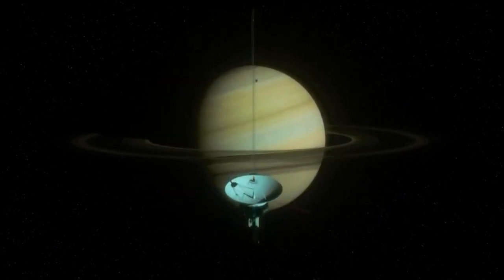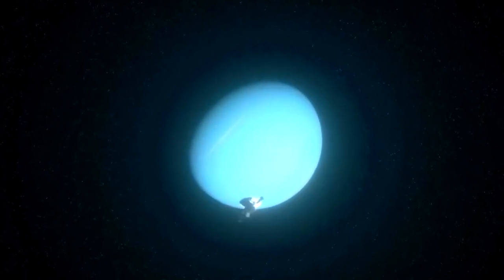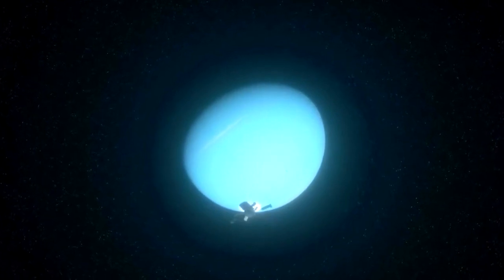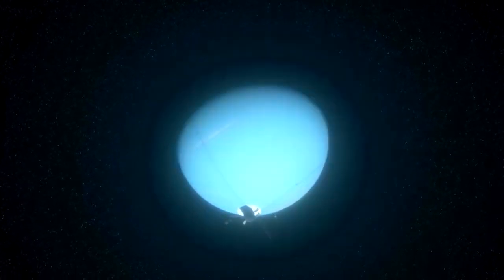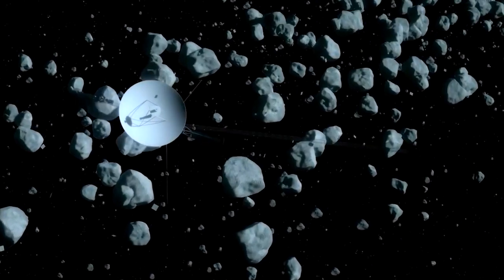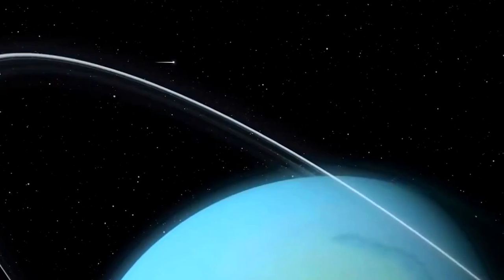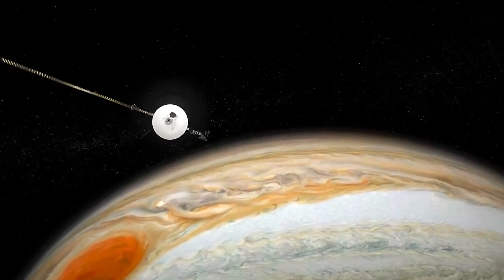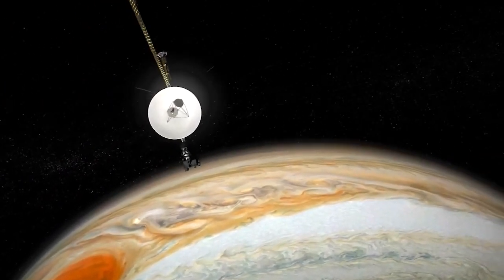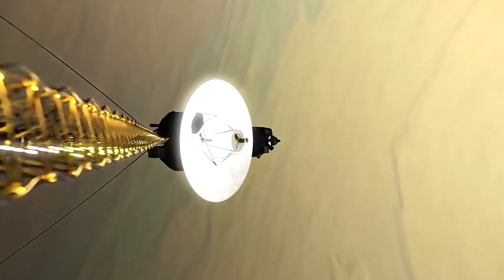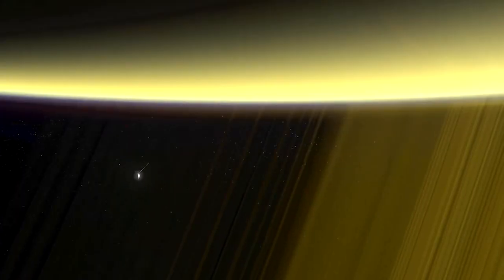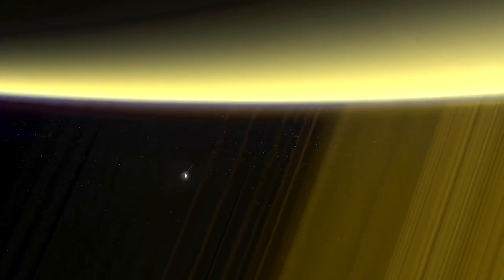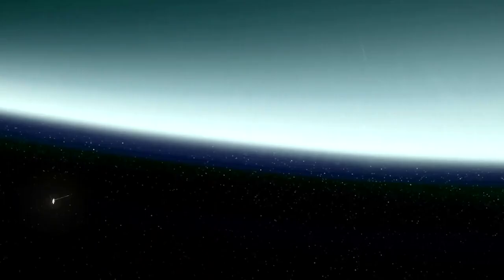Voyager 1's signal hasn't weakened either, which suggests the high-gain antenna remains in its prescribed orientation with Earth. The team will continue to monitor the signal closely as they continue to determine whether the invalid data is coming directly from the AACS or another system involved in producing and sending telemetry data. Until the nature of the issue is better understood, the team cannot anticipate whether this might affect how long the spacecraft can collect and transmit science data.